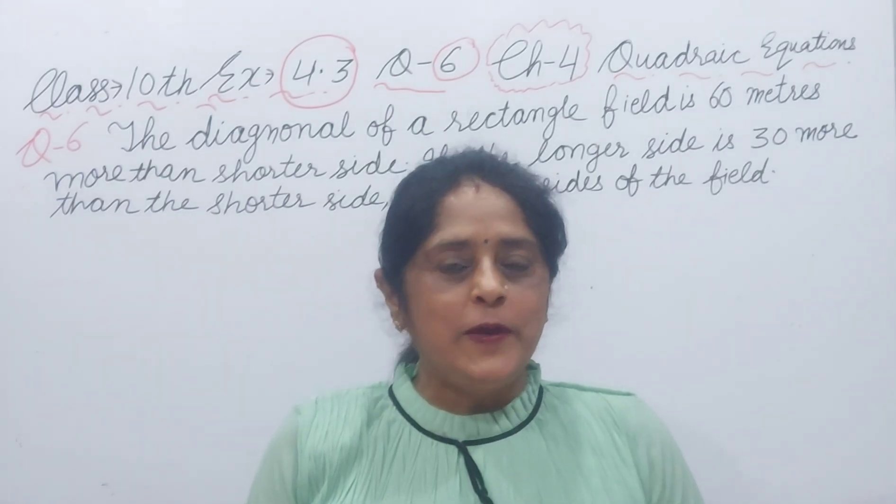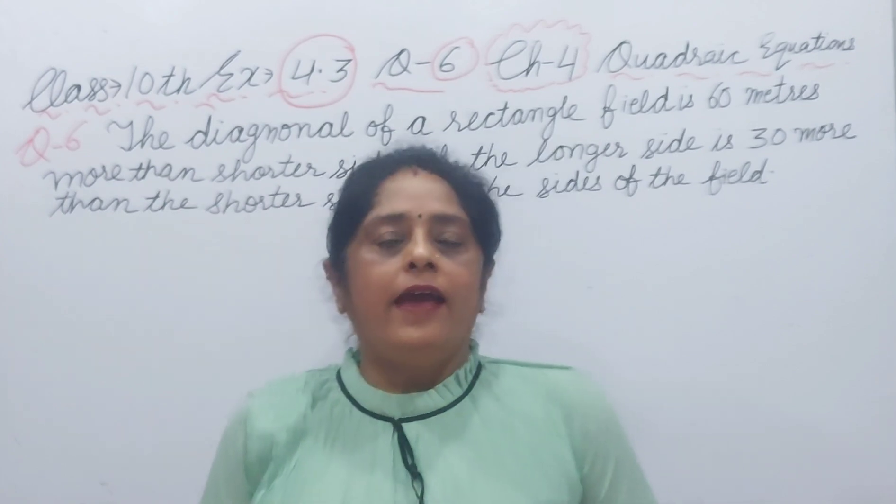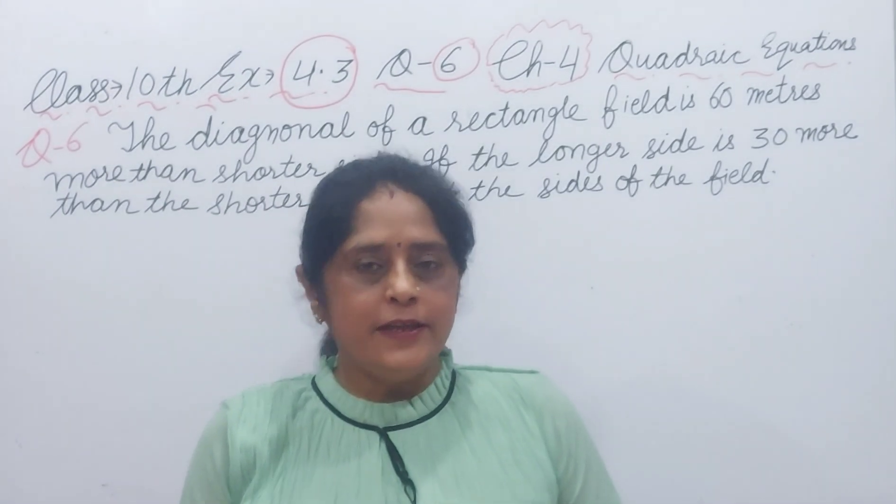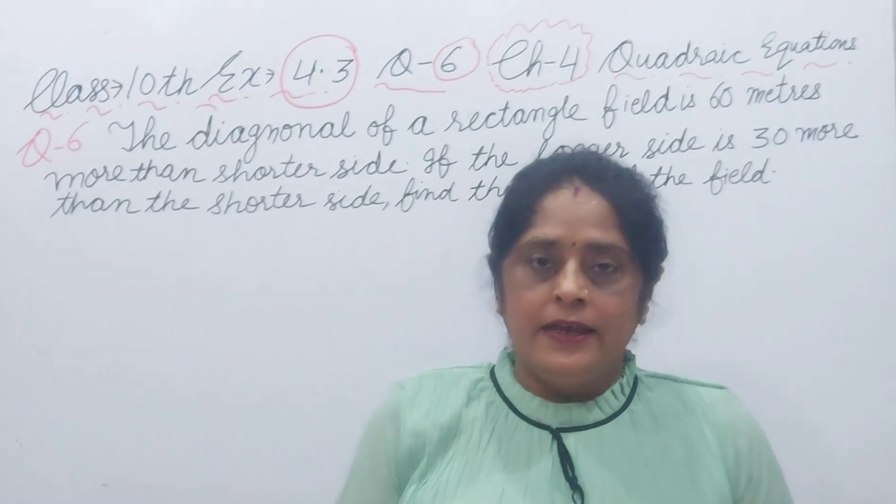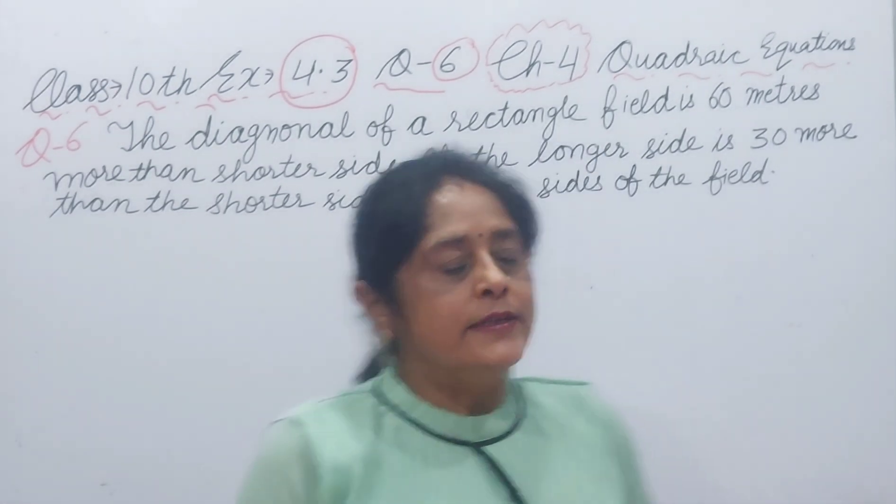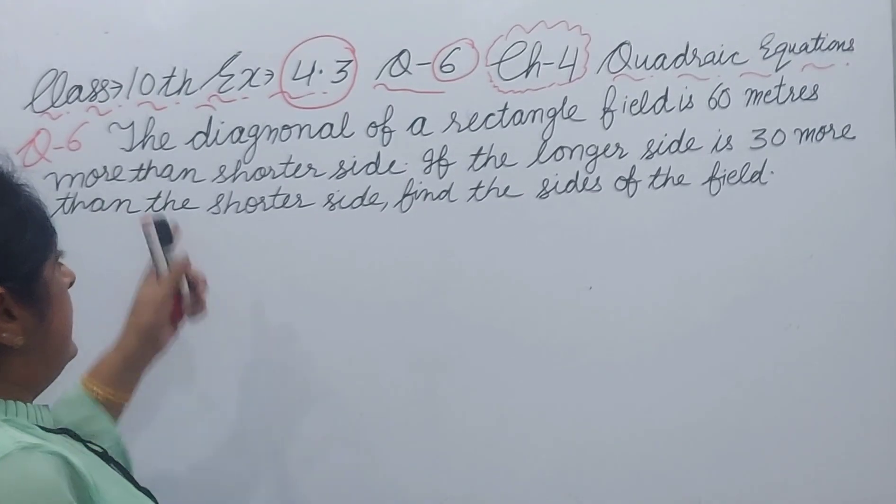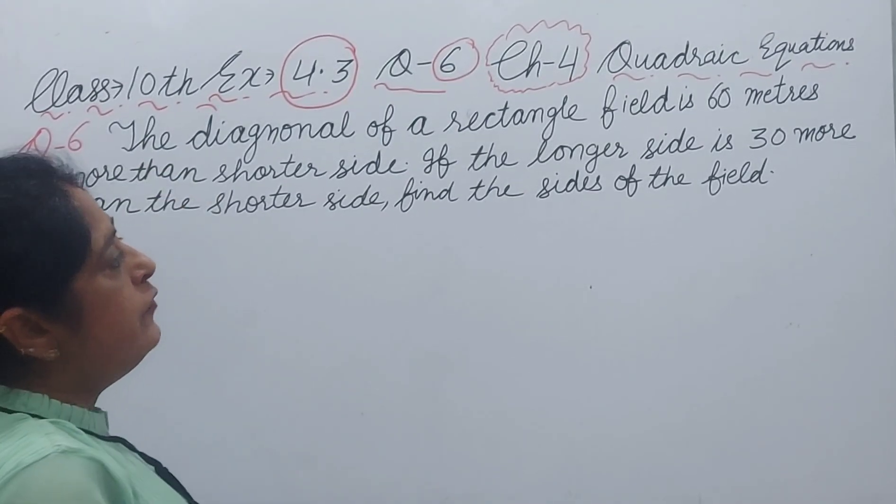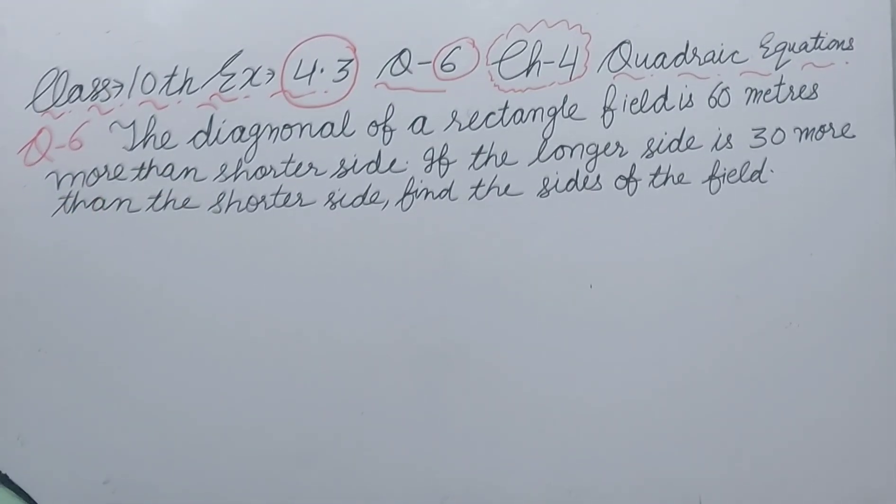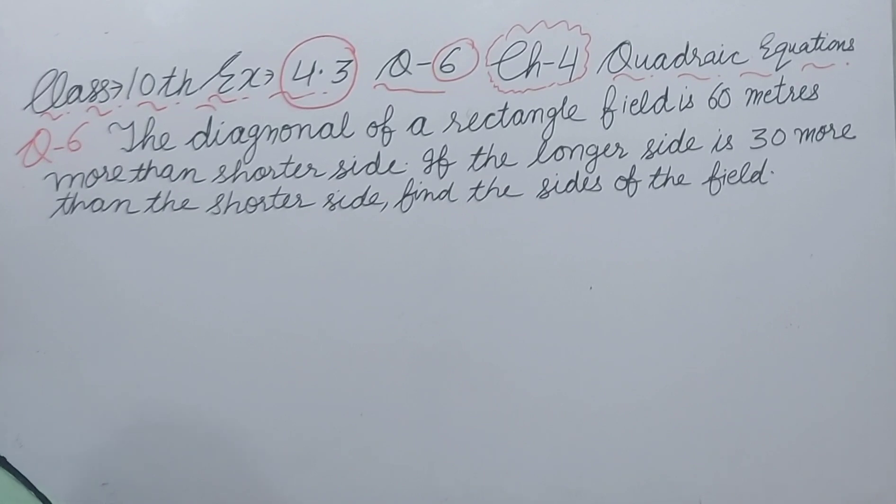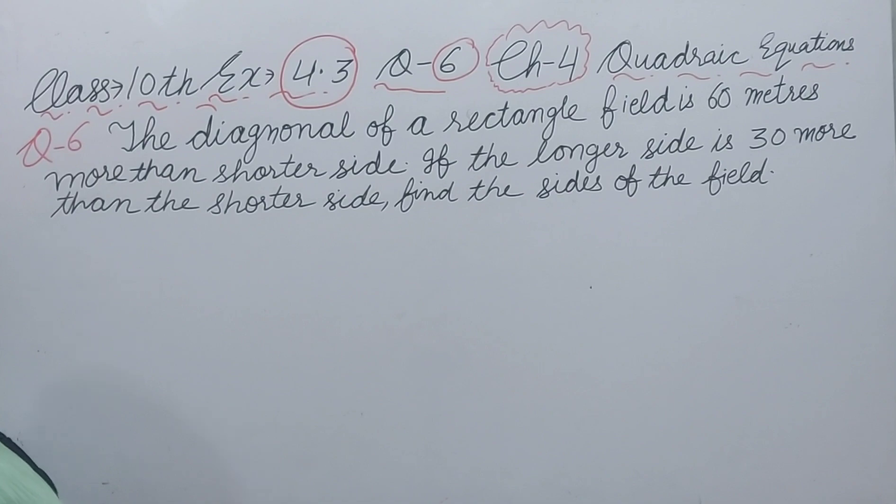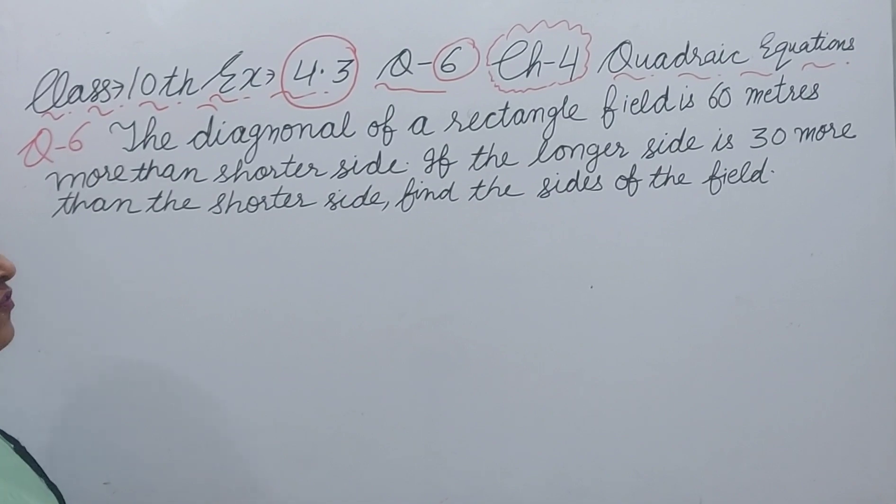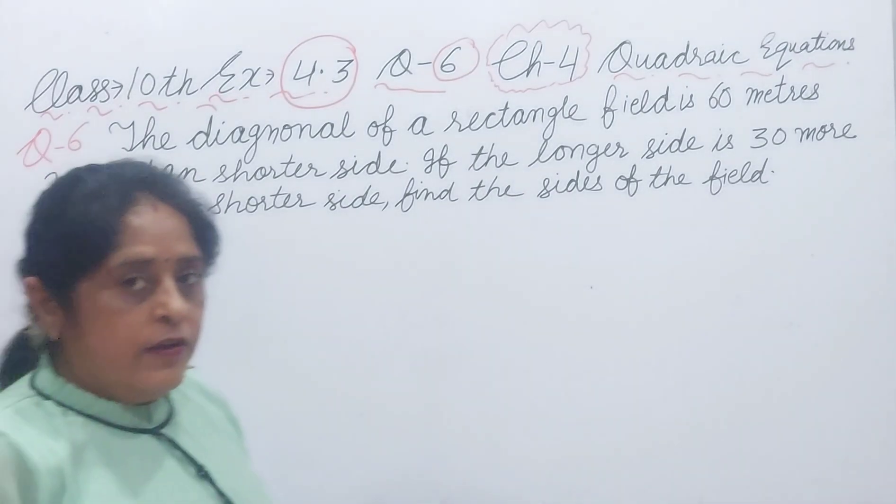Hello everyone, today I will explain exercise 4.3, question number 6 for class 10th maths. Now you see the statement. The diagonal of a rectangle field is 60 meters more than shorter side, and if the longer side is 30 meter more than shorter side, find the sides of the field.